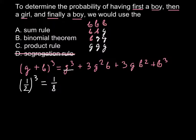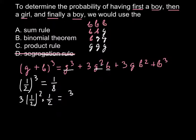What is the probability for two girls and one boy? Using the binomial formula: 3 × (1/2)² × (1/2)¹. Here (1/2)² = 1/4 for the two girls, multiplied by 3 gives 3/4, then multiplied by 1/2 for the boy gives 3/8.